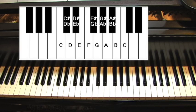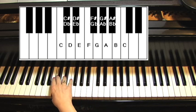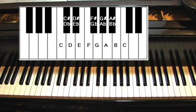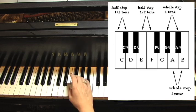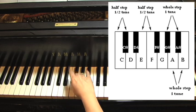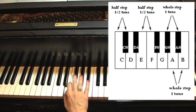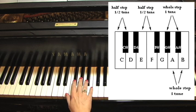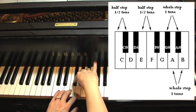Let's go to a chromatic scale. You play every key, which means we're going up and down by what we call half steps. A half step is the very next key up or down from a given note. To be a half step, it can be white to black, black to white. It could even be white to white, but never black to black, because there can be no key in the middle of a half step.